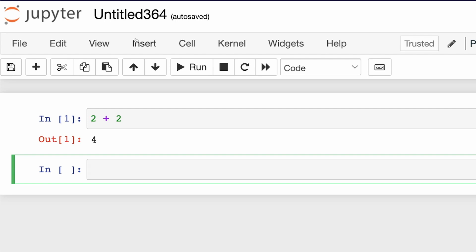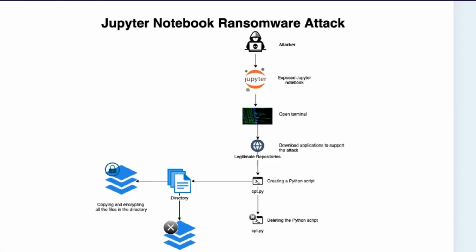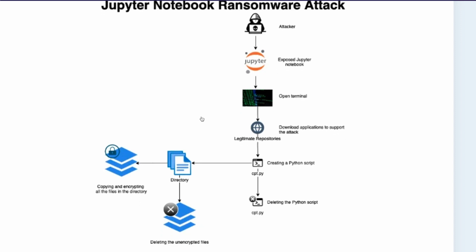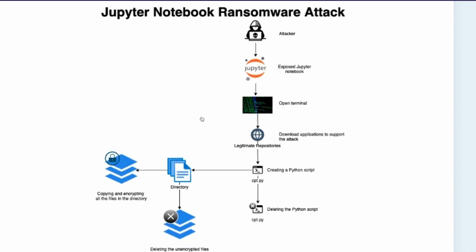If you leave your Jupyter Notebook unauthenticated and open on the internet, you're opening the front door of your server or your company's machine to hackers. If you use Jupyter Notebook professionally or as a hobby, check whether you have authentication set up and whether anyone can access it. Please spread the word to your organization, friends, and the data community — ransomware attacks are serious. If a hacker takes control of your machine, you basically cannot do anything.